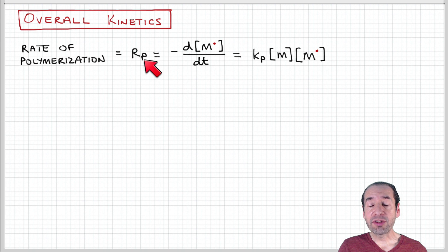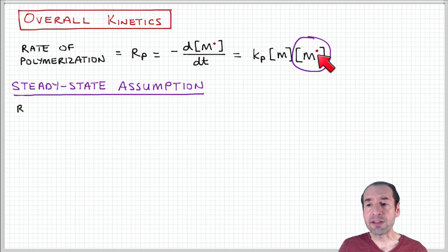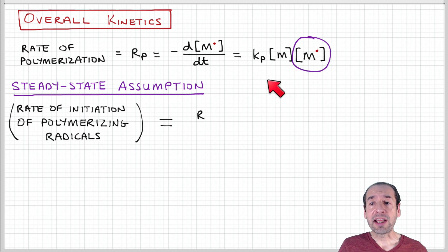Remember from when we talked about the propagation step of the reaction, we can express this rate of change in terms of the propagation rate constant times the concentration of monomer times the overall concentration of active chains. So we just need to get an expression for this quantity, because this is something that's not as convenient to observe and track as a function of the reaction progress.